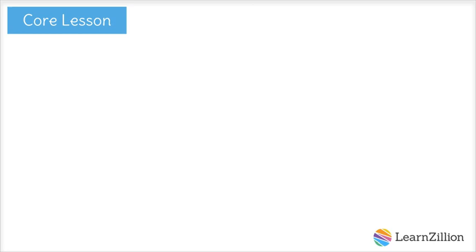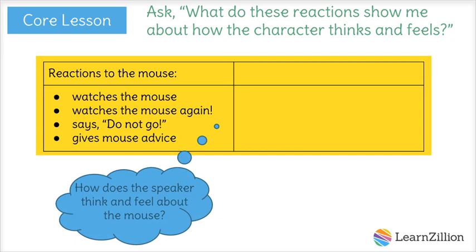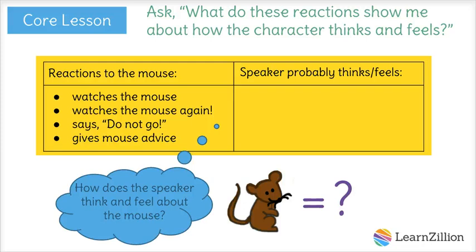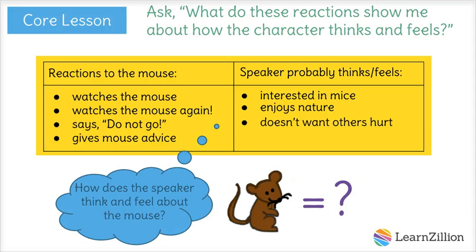So now I'll move on to step two and take my evidence and ask myself, how does the speaker think and feel about the mouse? The fact that he keeps watching the mouse again and again tells me he must really enjoy spending time with the mouse. Maybe he thinks mice are interesting — he could be a kid who really enjoys nature. Now the 'do not go' part is different from just watching the mouse. The speaker is actually talking to the mouse and telling him to watch out, which means he's worried about the mouse getting hurt. So I bet he doesn't want anything to happen to the mouse. This last piece of advice also goes along with that — I think it shows us that he's a really kind speaker who cares deeply about the mouse.